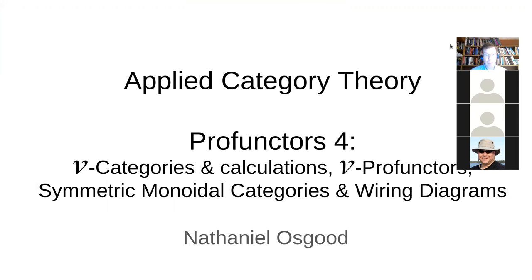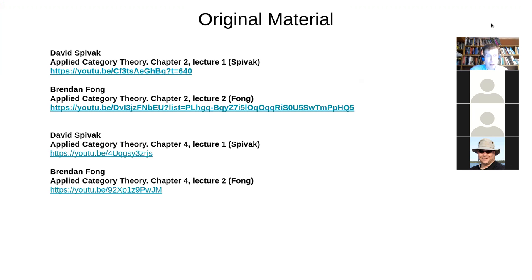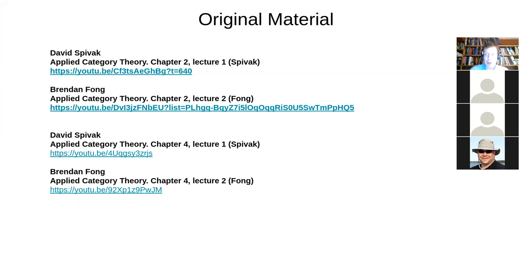Just as a reminder, this is our fourth meeting to go through material on profunctors, particularly focused on the applied category theory chapters two and four. As I noted in my opening remarks, these two chapters — while they're separated by a chapter on categorical databases — do mesh together in some notable ways. Some of those ways are well explored within the lectures themselves; others you really need to turn to the book to appreciate.